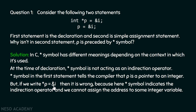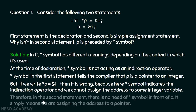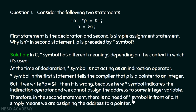We cannot store the address of some variable in another variable which is not a pointer. Therefore, if we write that statement, the star symbol acts as the indirection operator and we cannot assign the address of some variable to an integer variable. In the second statement, there is no need for a star symbol in front of p — it simply means we are assigning the address to a pointer.